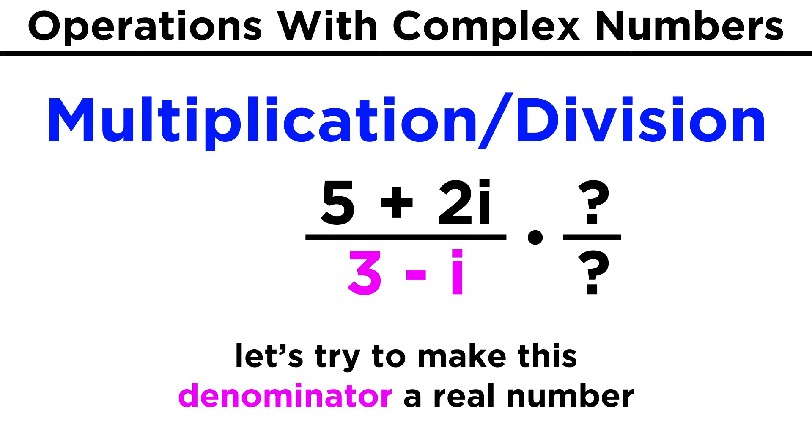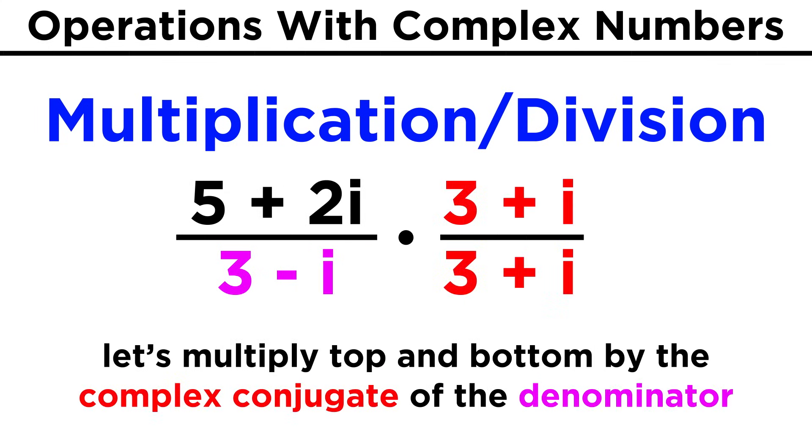But what will this complex number be? As it turns out, we will always get a real number when we multiply a complex number by its complex conjugate. The complex conjugate of a complex number is just the same number but with the sign in between the two terms reversed. So in this case, we want to multiply the top and bottom by three plus i. If this had been a plus, we would use a minus instead.